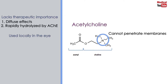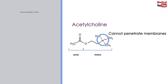But it can be used locally as an ophthalmic solution; it is available with the brand name Miochol. Its actions are the same as we discussed before in parasympathetic actions, and that is because it acts on both muscarinic and nicotinic receptors.